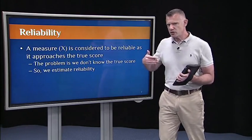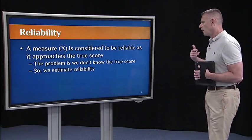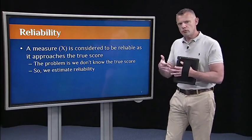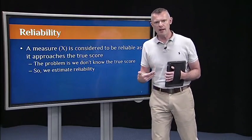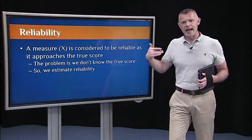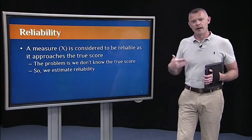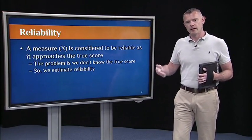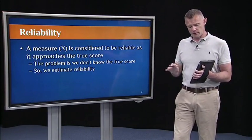So here's the heart of classical test theory. In a perfect world, it'd be possible to get the true score for whatever it is we're trying to assess. Any raw score X is actually the true score plus some bias if it exists, plus some chance error. This is also known in psychometrics as true score theory. As a measure X approaches the true score, it's considered to be reliable. The problem is we don't know what the true scores are. We just have to estimate reliability. And there are several ways to do that, and I'm going to walk you through three of them here in this segment.